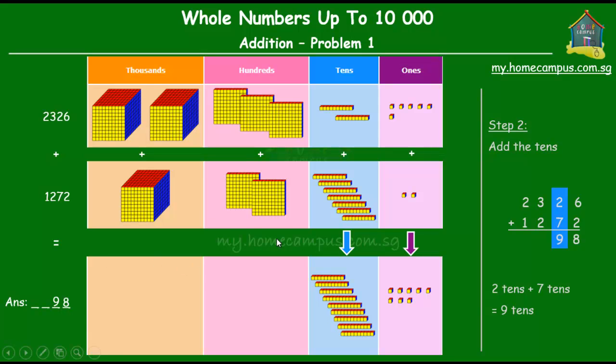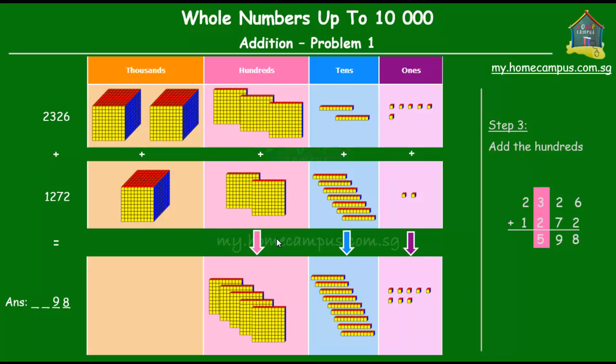Next up is the hundreds. The third step is to add the hundreds. So we add the three hundreds plus the two hundreds. That's equal to five hundreds. So the five goes in the hundreds place.